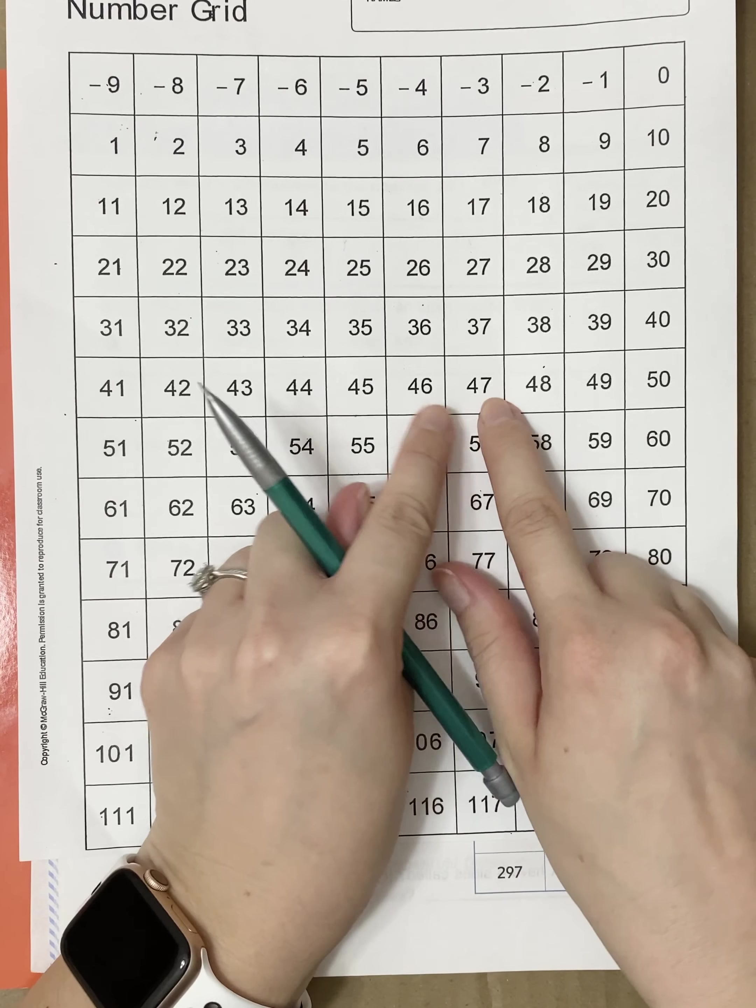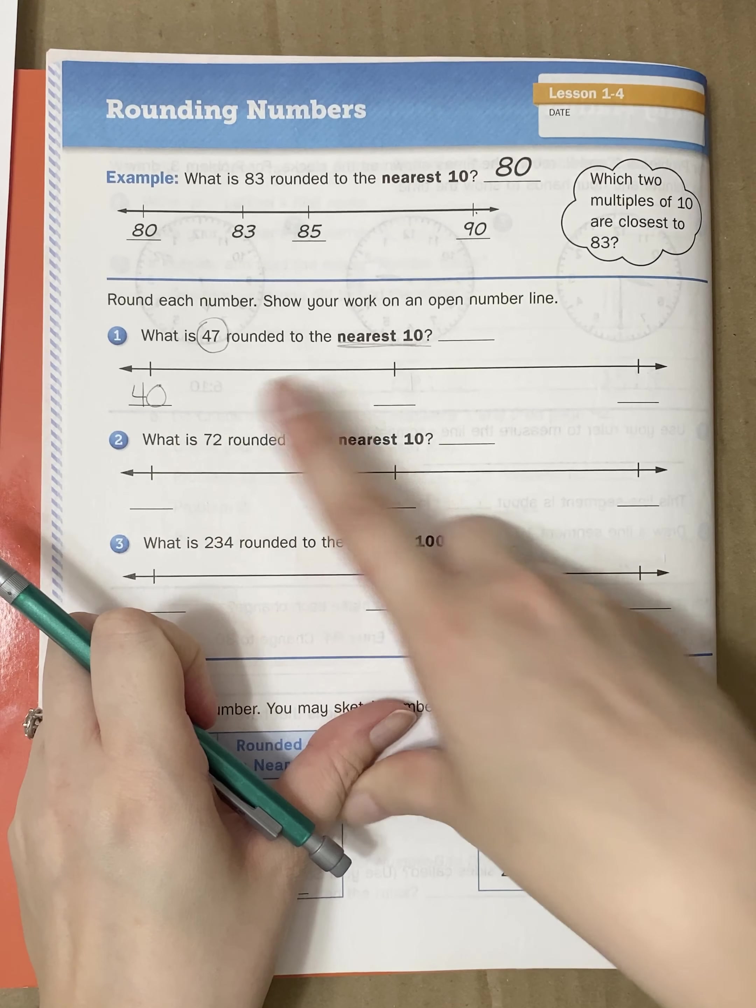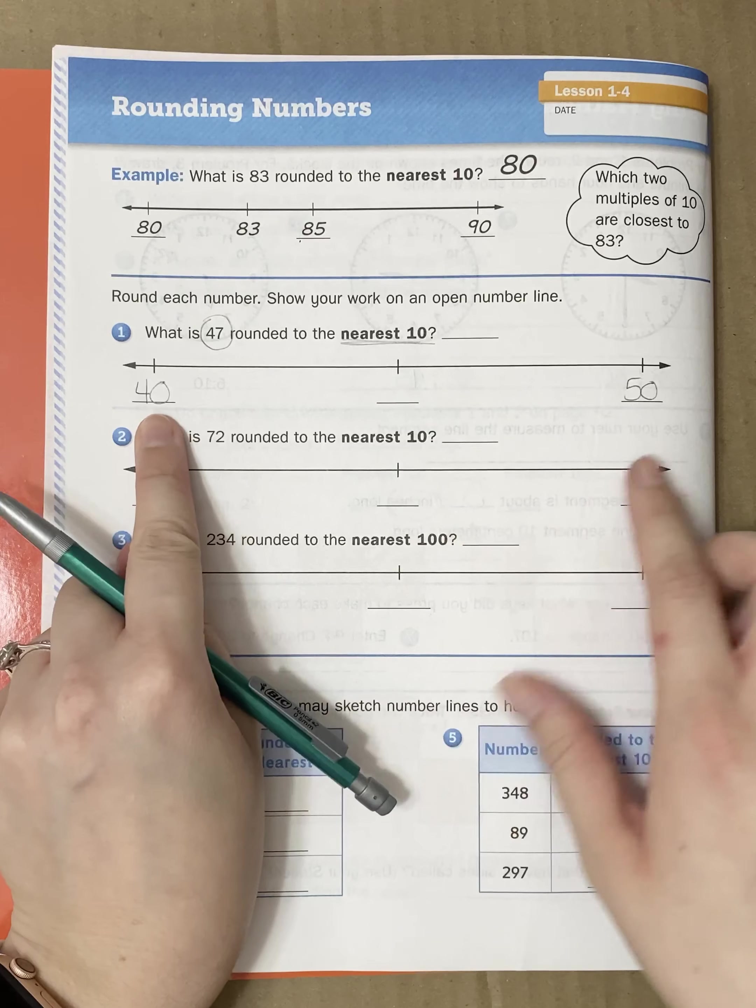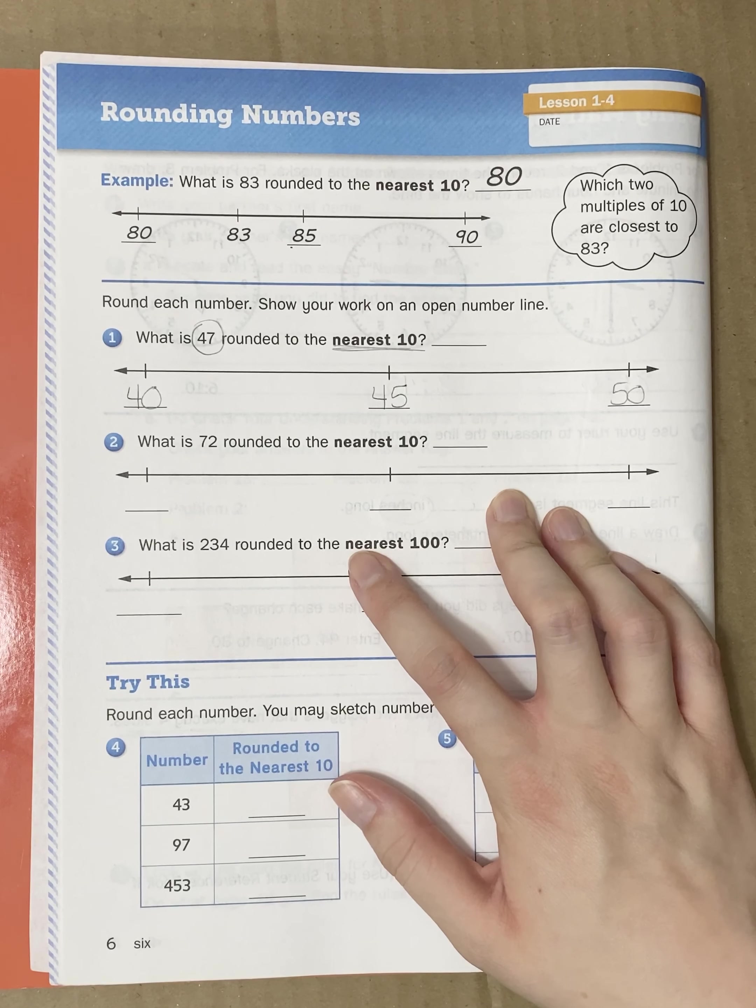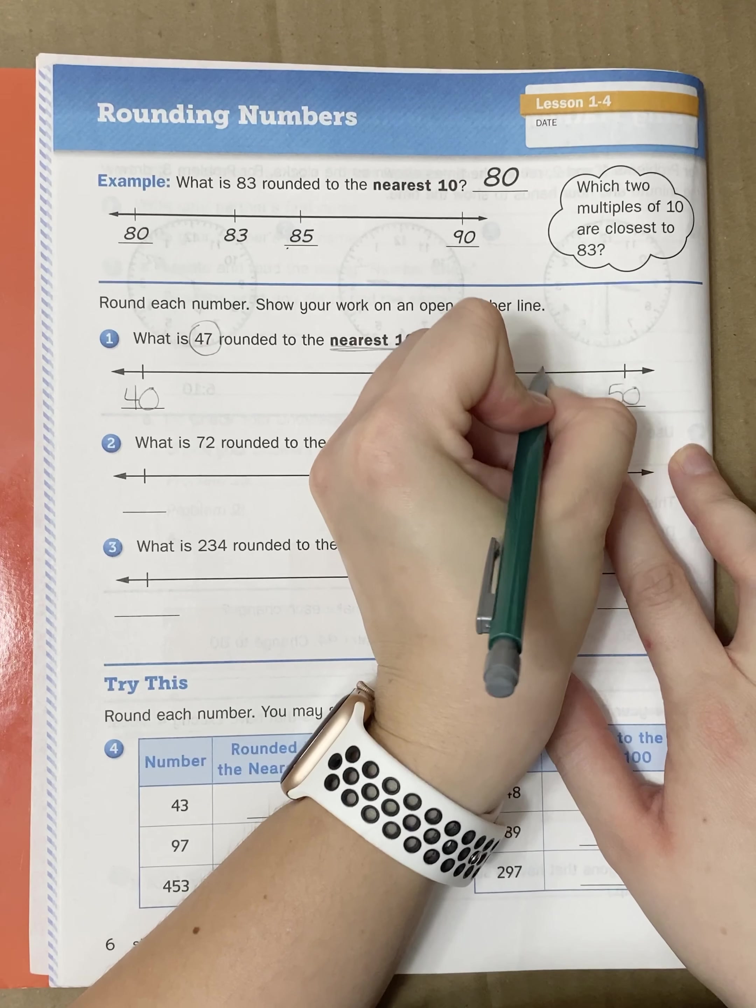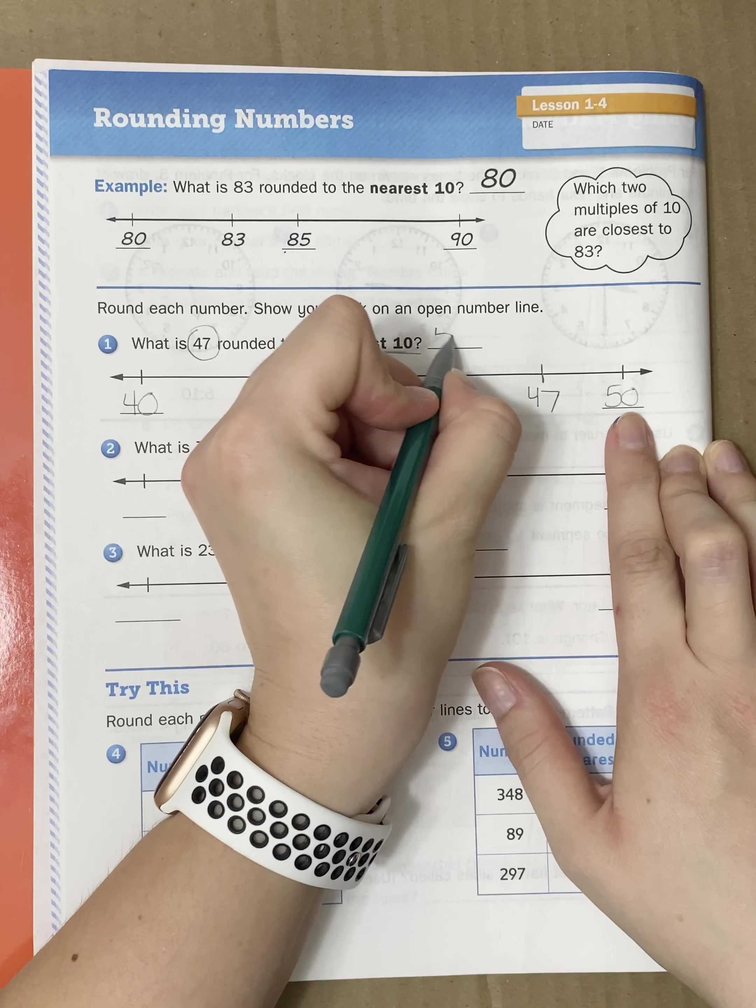So again, let's look on our number line. Here's 47. What is the 10 that comes before 47? If I go back on my number grid, I see that it is 40. And if I go to the next 10 up from 47, it is 50. Again, using the number grid when you can. This is a helpful tool. What is halfway between 40 and 50? It is 45. So, would 47 fit between 40 and 45? Or would it fit between 50 and 45? It would go somewhere between 45 and 50. So, which number am I going to pick? 50.